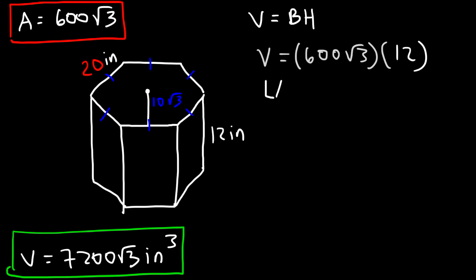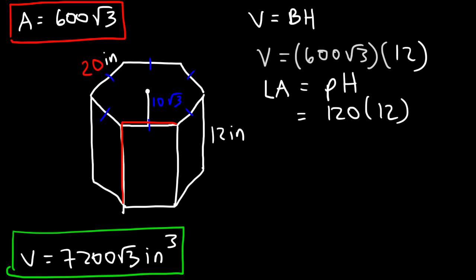Next, let's calculate the lateral area. The lateral area is the perimeter of the hexagon multiplied by the height. The perimeter is 120, which is 6 times 20, and the height is 12. The lateral area is the area of all six faces — the area of just one face is the height times the side length, so this part is 20 and this part is 12.